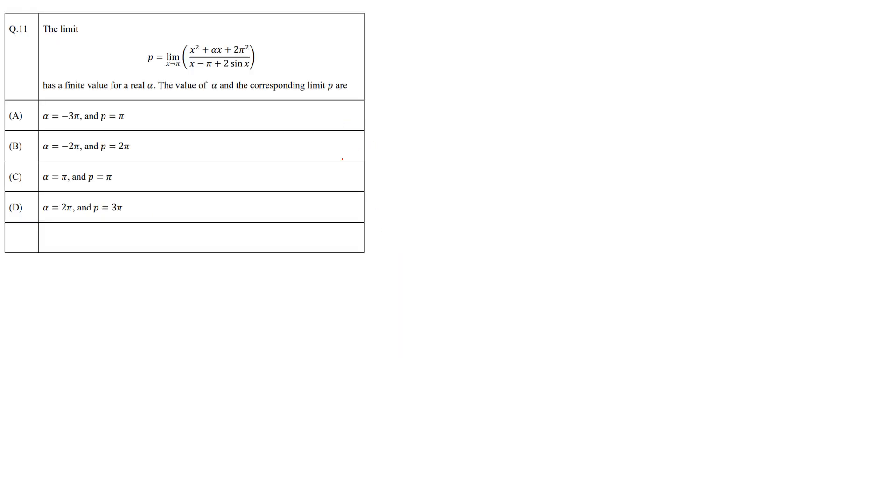Now let's solve this question. We have been given p which is limit x tending to pi of this expression: (x squared plus alpha x plus 2 pi squared) over (x minus pi plus 2 sin x).